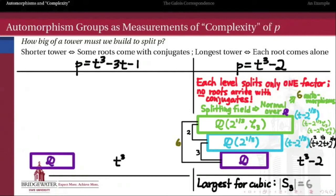By contrast, t cubed minus 3t minus 1 takes less work to locate its roots, though it does take quite a bit of work to prove that all those roots are where we claim. We can show that t cubed minus 3t minus 1 is irreducible over Q merely using the rational roots theorem — cubics are irreducible if and only if they have no roots in the base field. And because this polynomial doesn't have a rational root, it's irreducible over Q. But it is cubic, and by calculus using the intermediate value theorem, we can show that every cubic — any polynomial of odd degree — will always have at least one real root.